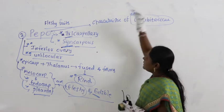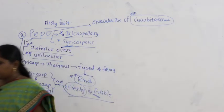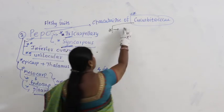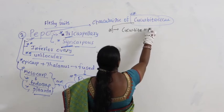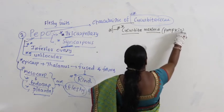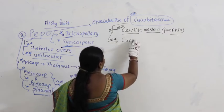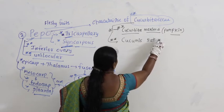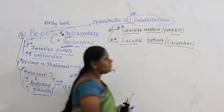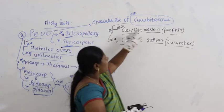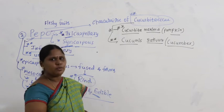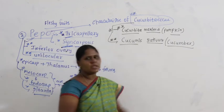For every family there is a specific character. For Cucurbitaceae, the type of fruit is pepo. Examples are Cucurbita maxima — commonly called pumpkin — and Cucumis sativus — commonly called cucumber.